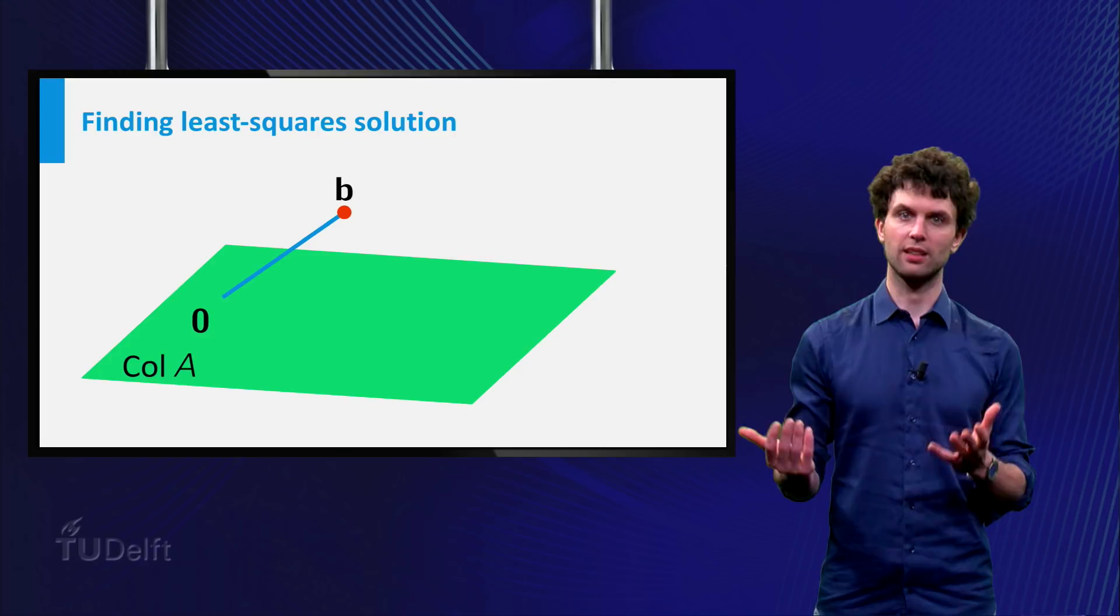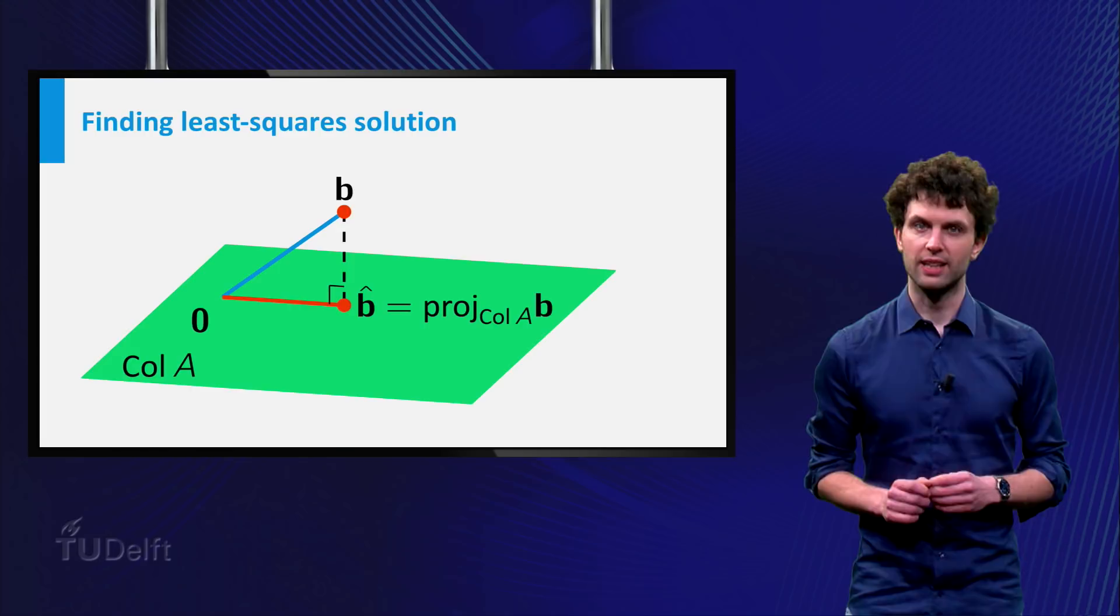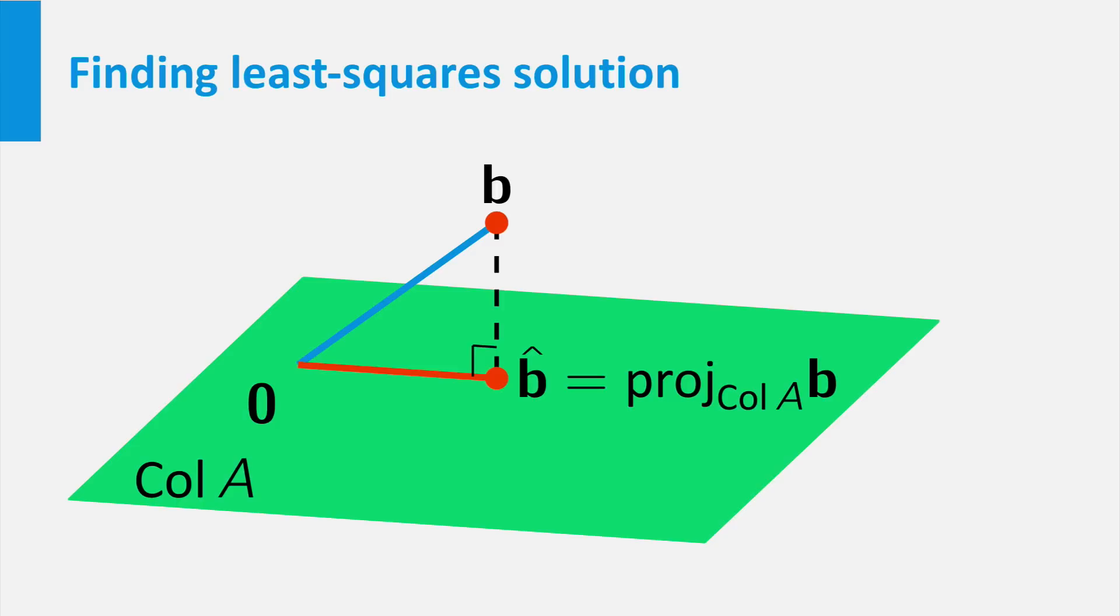Now suppose b does not lie in the column space of A. We know that the vector in the column space of A which is nearest to b must be the orthogonal projection of b onto the column space of A. Let's denote that vector by b̂.